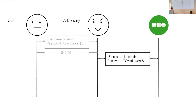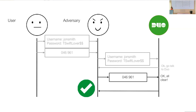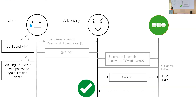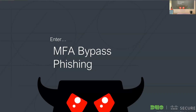Now the attacker, at their leisure, goes ahead and logs into your authenticator — using Duo as the example, but this applies anywhere. They complete the MFA and they're in. You're very sad, thinking: 'I used MFA, I did my annual security training, I don't know what I did wrong. Maybe if I just never use a passcode again I will be safe.' Spoiler alert.